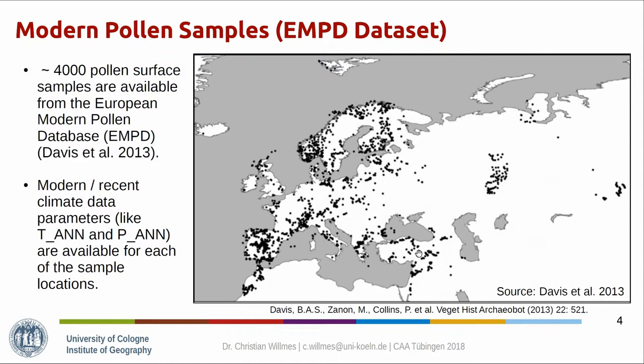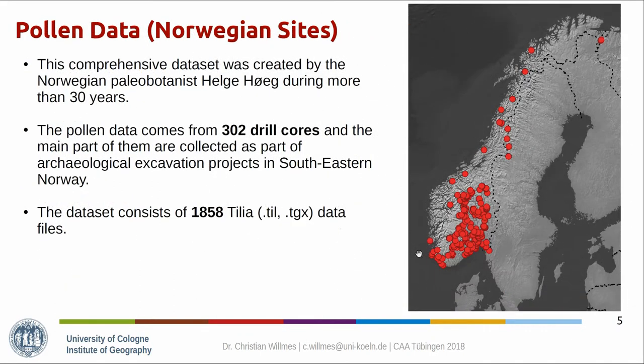To these modern pollen samples, we linked mean annual temperature and mean annual precipitation parameters from today. Here you can see a map of the locations of the sites we work with from the dataset created by Helge Hoek during his research career.